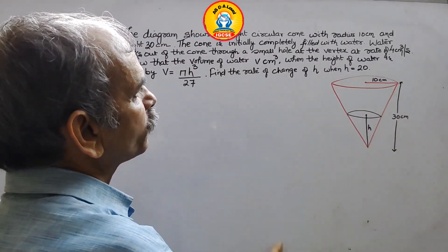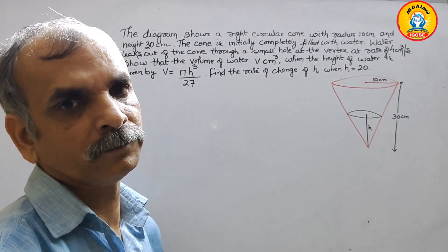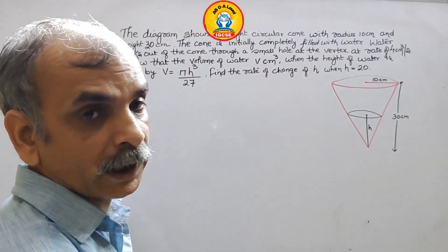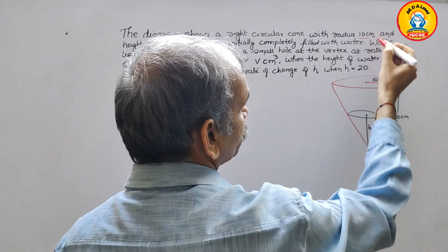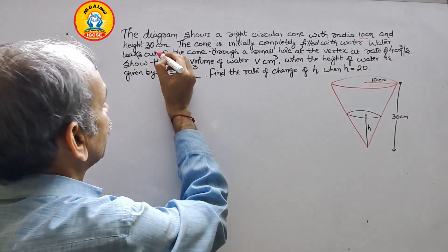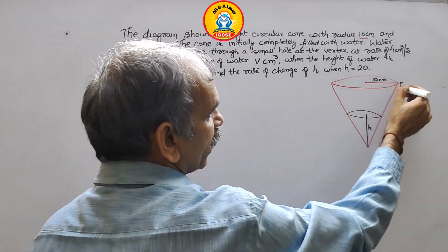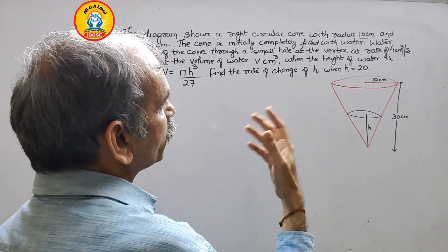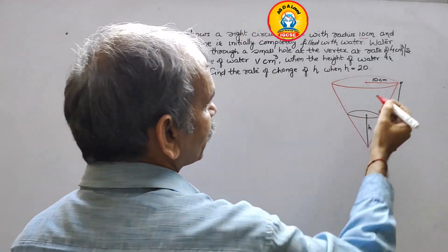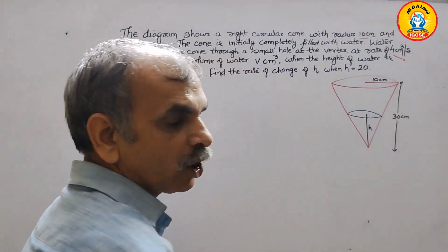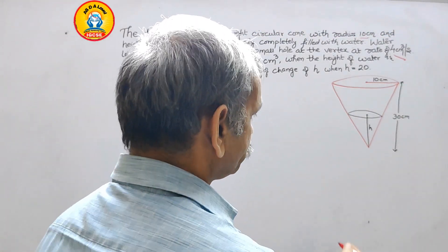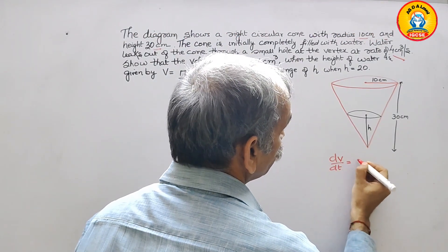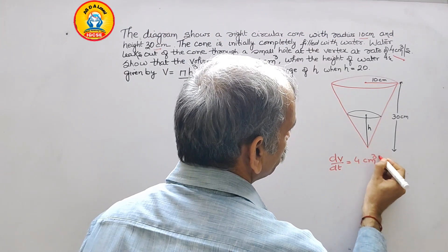So here what they have given: see that radius is 10 cm, that means this, and 30 cm is the total height. Next, the cone is initially completed with water. Water leaks out at the rate of this, that means this is your dv/dt. dv/dt is equal to 4 cm³ per second.